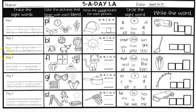Day two. What sight word are we tracing here? B-U-T — but. 'I want to go to the store, but I don't have any money.' You're going to write B-U-T twice.